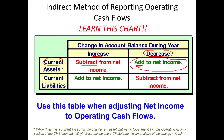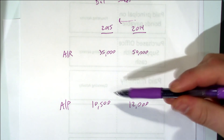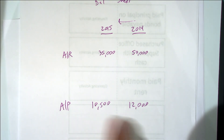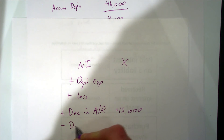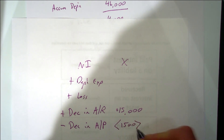For current liabilities: if they increase, you add them to net income; if they decrease, you subtract them from net income. Let's say we have a current liability such as accounts payable, and it went from $12,000 to $10,500 — that's a decrease of $1,500. Per our chart, a decrease in a current liability means we subtract it from net income. This makes sense because the accounts payable decreased due to a cash outflow. So you would say: less decrease in accounts payable — $1,500.